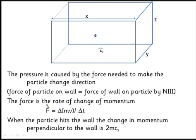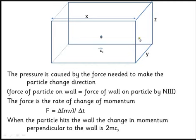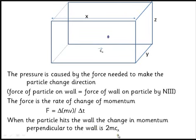From Newton's second law, force is the rate of change of momentum — the change of momentum divided by the time. The time here is not the time when it's actually hitting the wall, but the total time between collisions. When the particle hits the wall, its momentum goes from +mcx to −mcx, so the change in momentum is 2mcx.